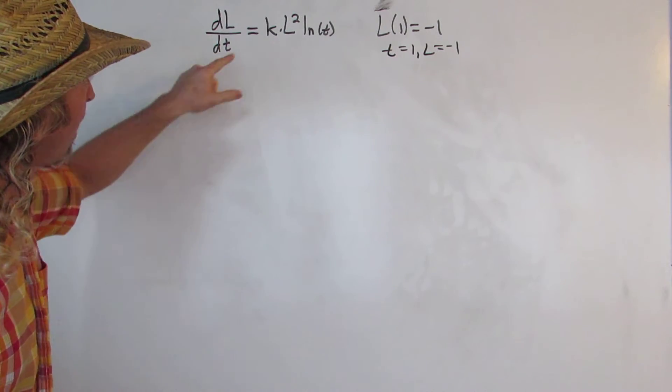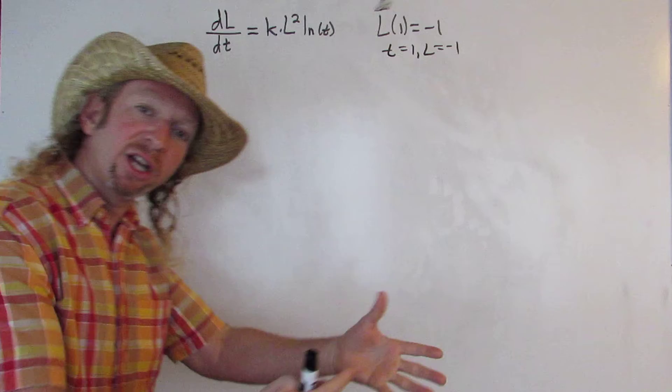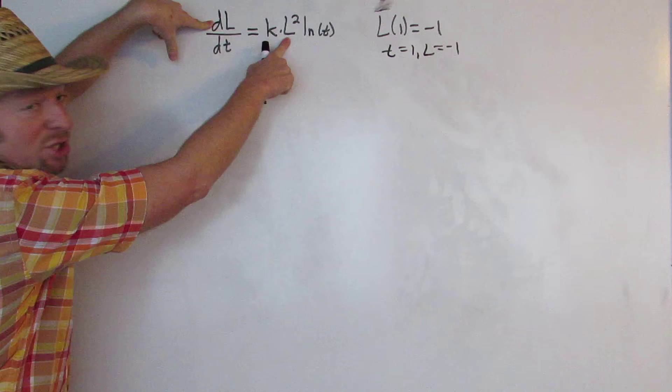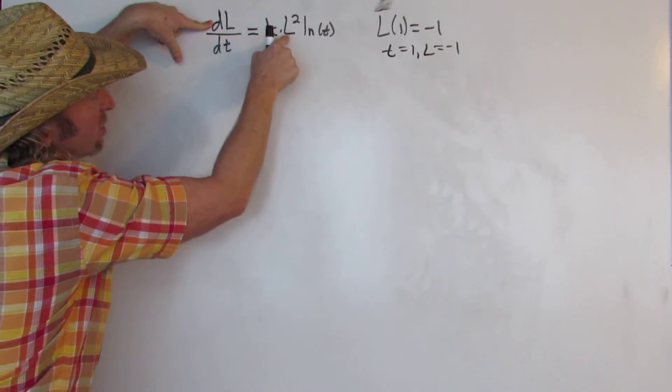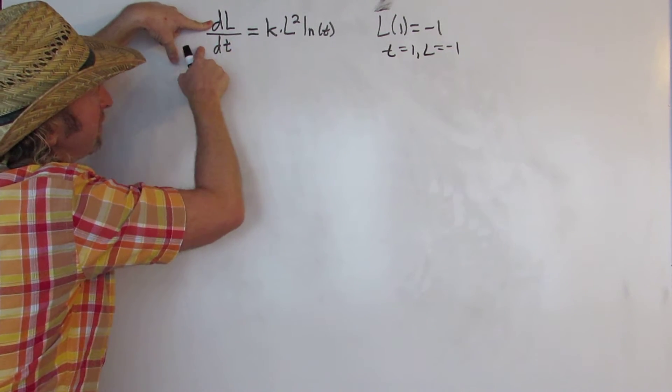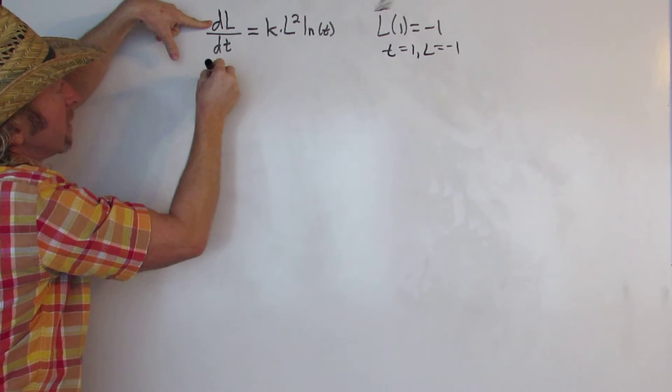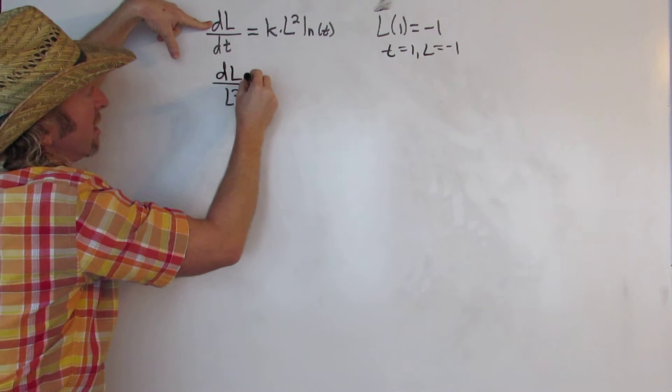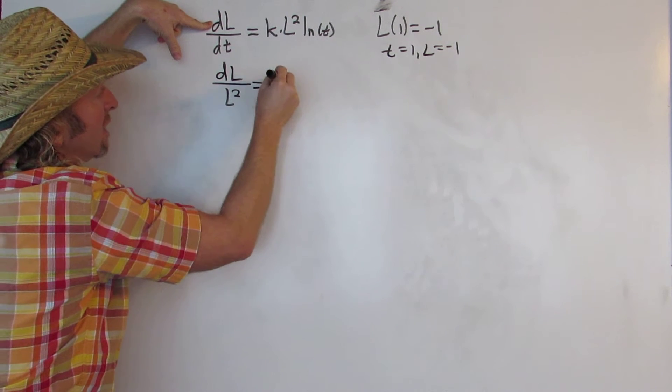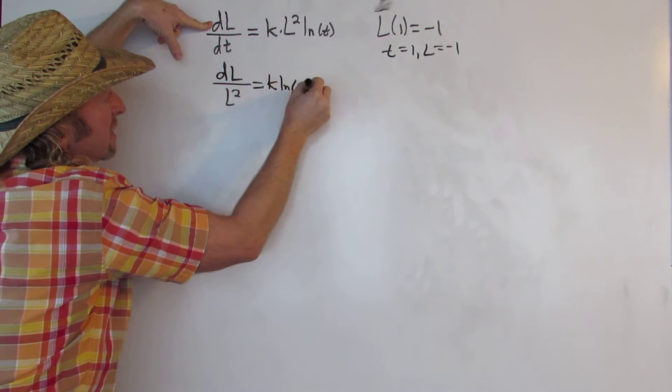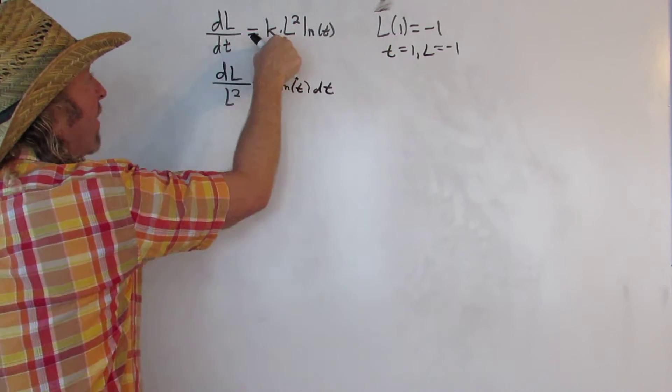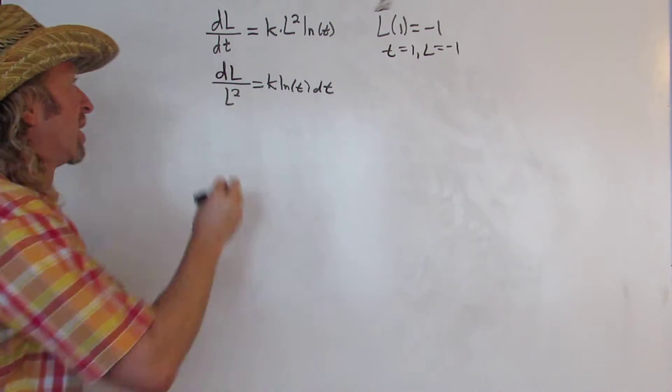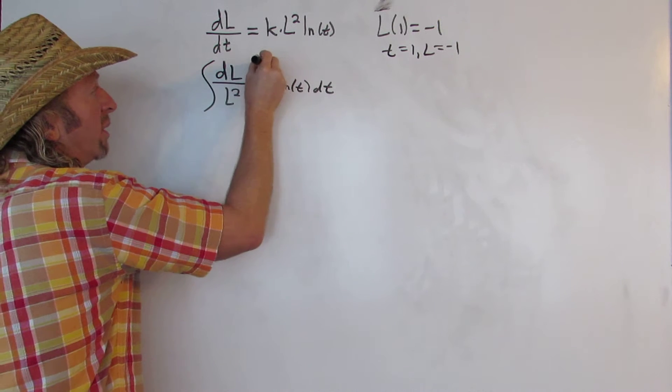So how do we solve this? Well I'm thinking we can separate this. What that means is we're going to get all the variables together by themselves on one side. So here we have a dl, so we should put the l's on the left hand side. So maybe we can divide by l squared and then multiply by dt. So we'll have dl over l squared, then we'll multiply by dt, so we get k natural log of t dt. So again, all we've done is divide by l squared and multiply by dt. Now what we'll do is we'll integrate both sides.